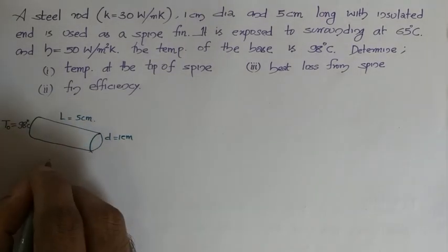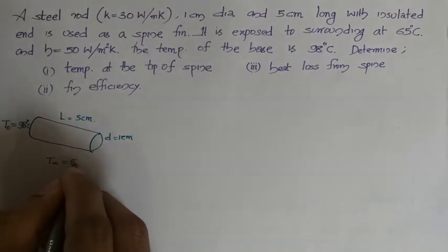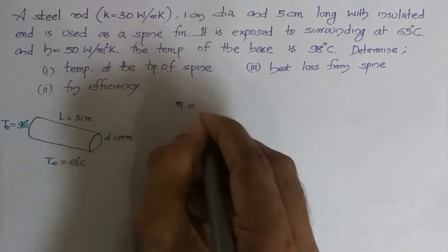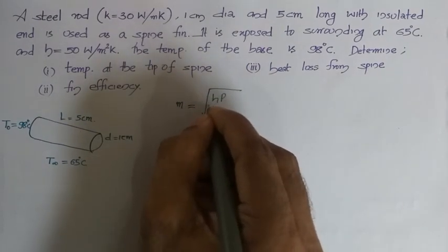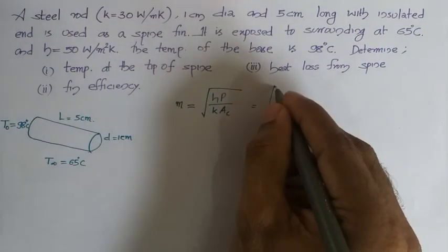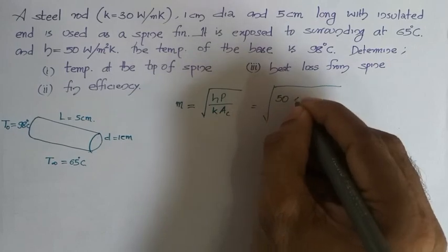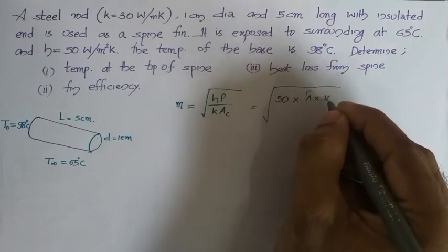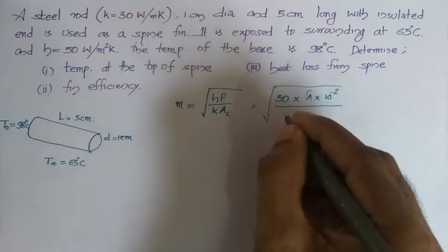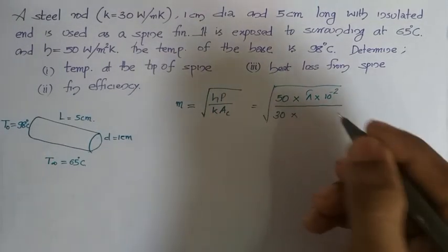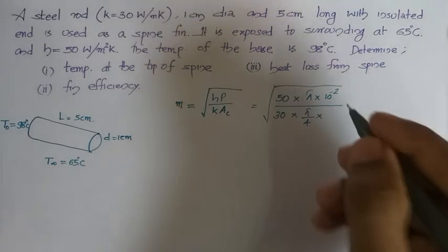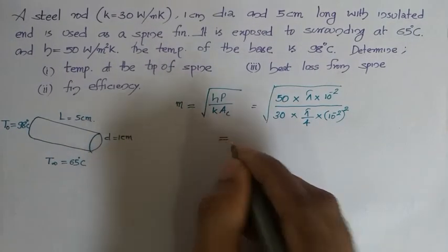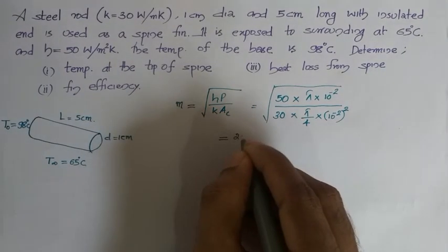Base temperature is 90 degree Celsius and atmospheric temperature is 65 degree Celsius. In any fin problem, first you will be evaluating the parameter M, which is defined as square root of H·P divided by K·Ac. This equals square root of H (50 SI units) into perimeter — for circular cross-section, perimeter is π times diameter, π times 1 centimeter or 10 raise to minus 2 meter — divided by K (330) into Ac (π/4 into diameter squared, which is 10 raise to minus 2 whole square). Solving this gives M = 25.82.